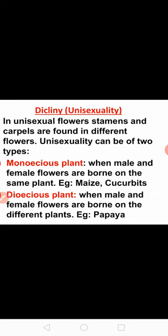In monoecious plants, male and female flowers are born on the same plant. In dioecious plants, male and female flowers are born on different plants. Examples for monoecious are maize, cucumber, etc. And for dioecious, it is papaya.